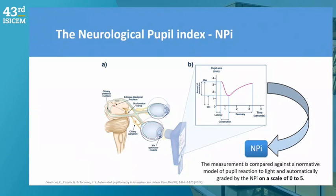On the other hand, because of confounders like sedation and pain, we can have small pupils or difficult-to-understand reactivity. So the company developed a proprietary algorithm called the Neurological Pupil Index (MPI) that takes into account all these elements and gives you an idea how far your patient is from the normal population. The range goes from zero — no reactivity — to five, which is normal.